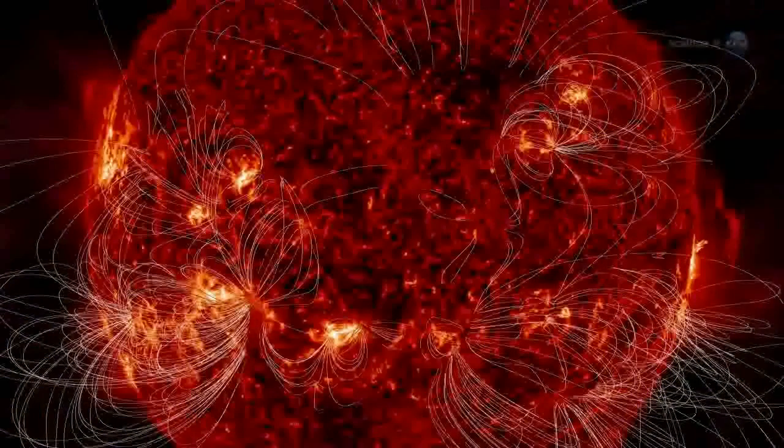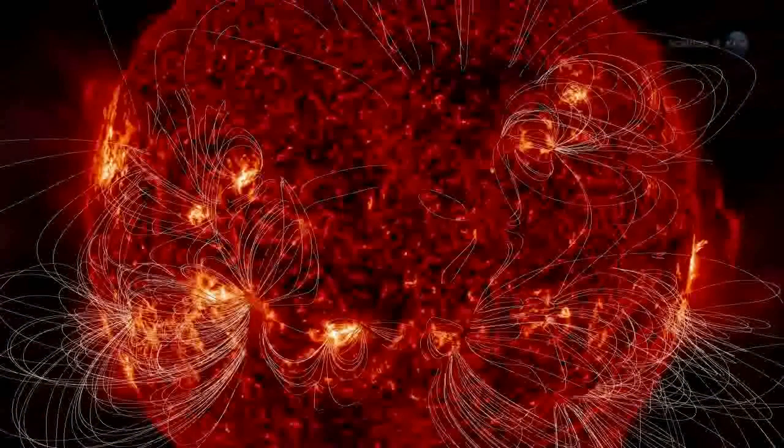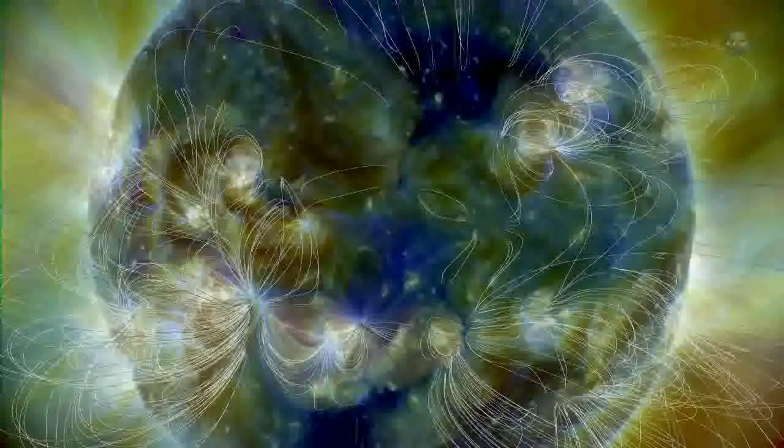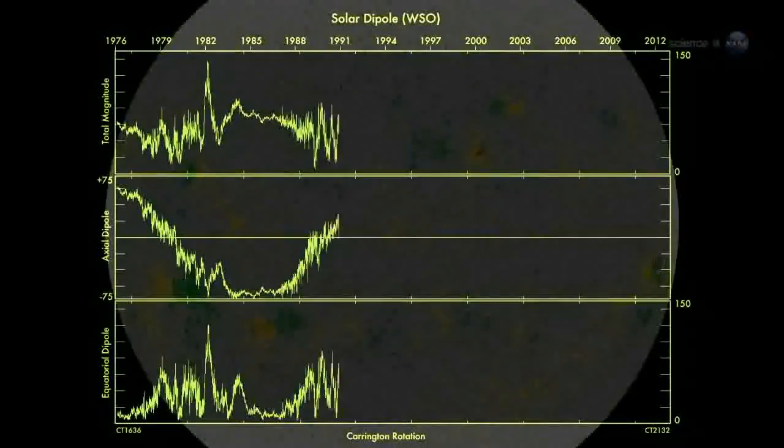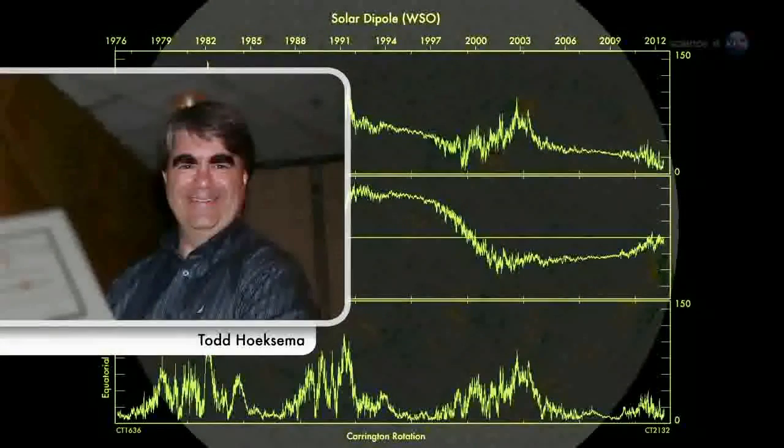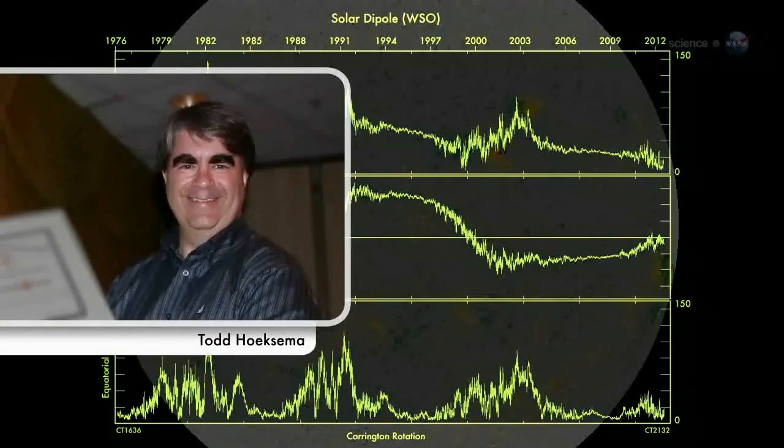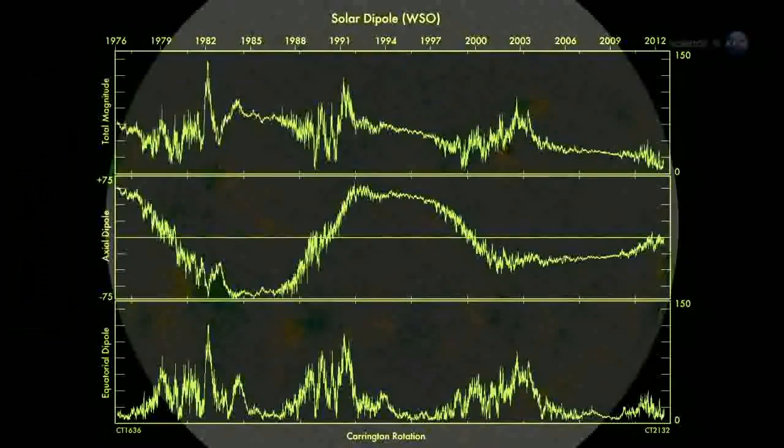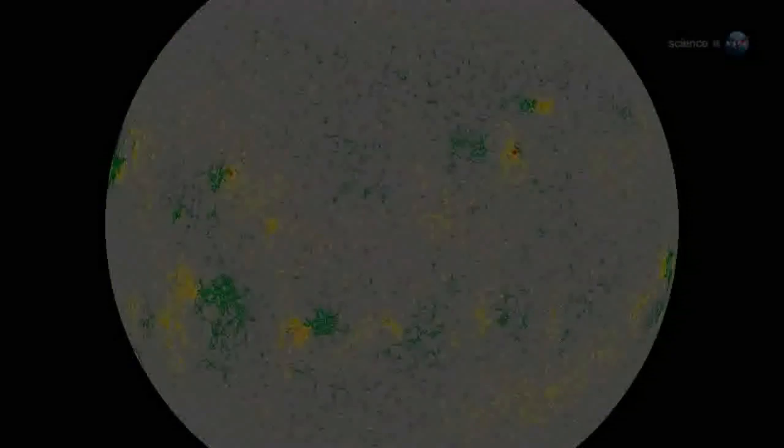According to measurements from NASA-supported observatories, the Sun's vast magnetic field is about to flip. It looks like we're no more than three to four months away from a complete field reversal, says solar physicist Todd Huxama of Stanford University. This change will have ripple effects throughout the solar system.